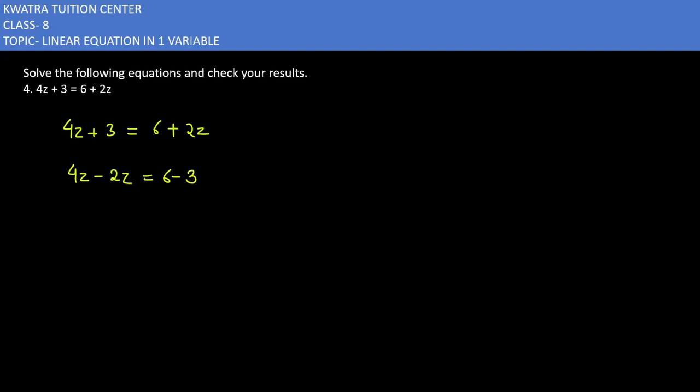6 minus 3, so this is 2z equals 3. The z value is equal to 3 by 2. So z in this case is 3 by 2, and what you have to do is verify the result.